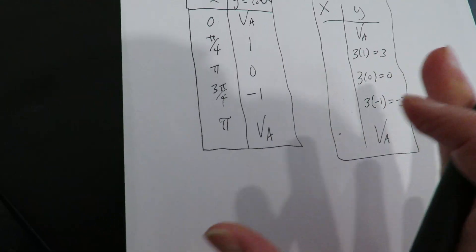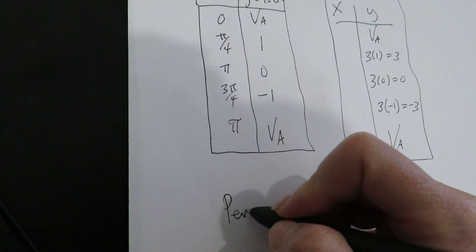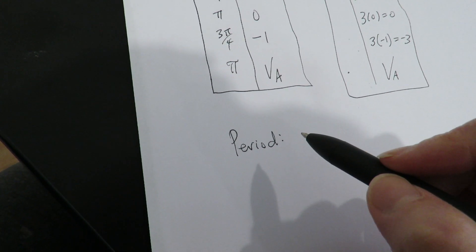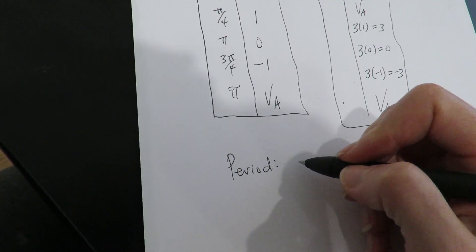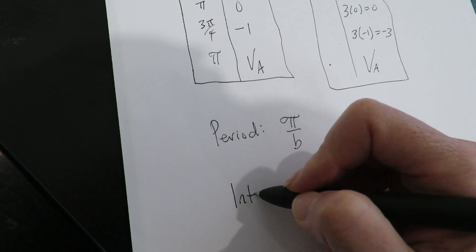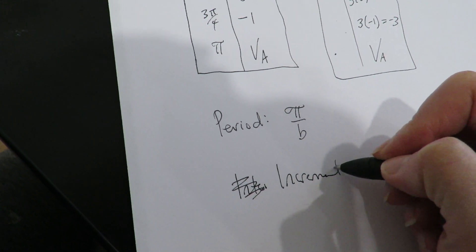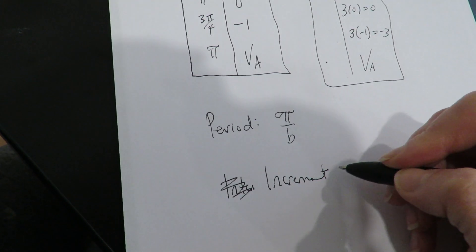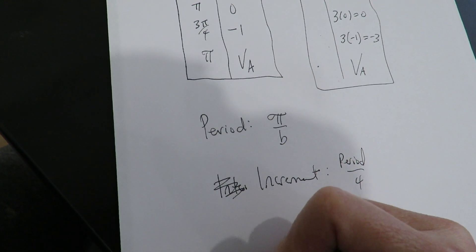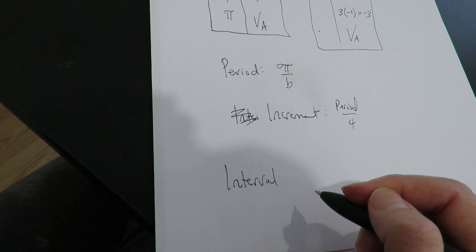The formulas in general are the same except the interval is different. So in terms of the formula for the cotangent, the period formula is the same for the cotangent and the tangent which is going to be pi over b. The increment is the same for all functions, it's the period over 4.